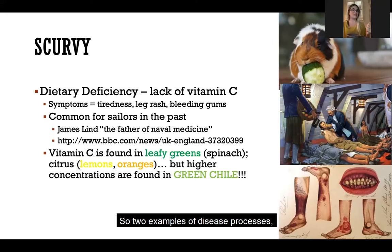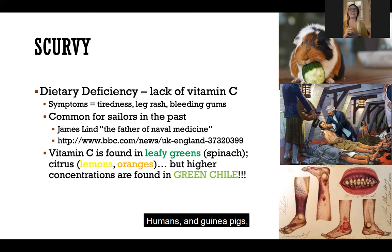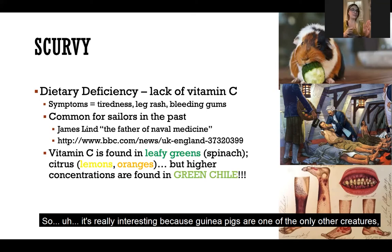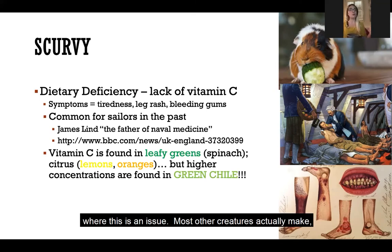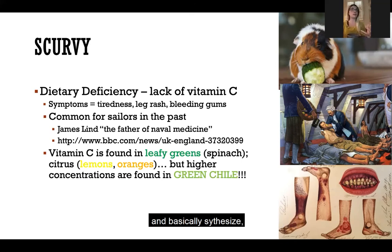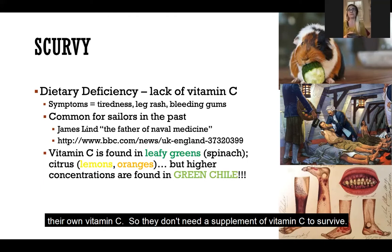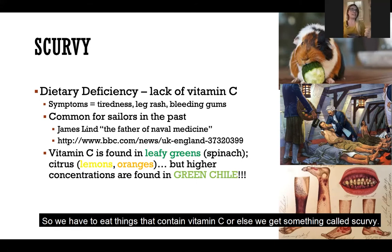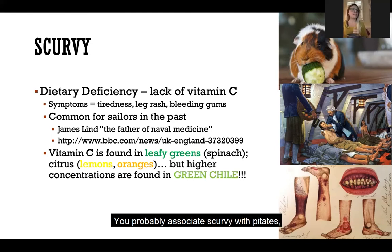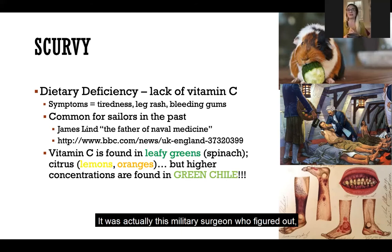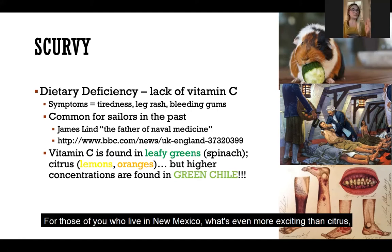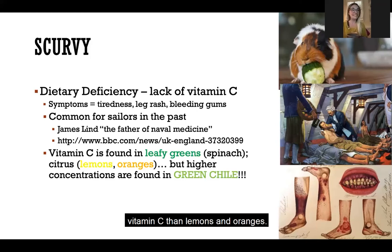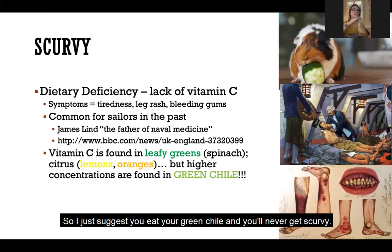Two examples of disease processes that leave marks on our skeleton: the first one is scurvy. Humans and guinea pigs cannot create vitamin C themselves — guinea pigs are one of the only other creatures aside from humans where this is an issue. Most other creatures synthesize their own vitamin C, so they don't need a supplement to survive. But guinea pigs and humans do, so we have to eat things that have vitamin C or else we get scurvy. You probably associate scurvy with pirates and seafaring people, and you wouldn't be incorrect. A military surgeon figured out that to fix scurvy you just need some citrus. For those of you in New Mexico, green chili actually has more vitamin C than lemons and oranges.